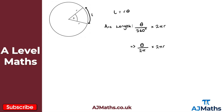Clearly the 2π cancels, and what we're left with is theta times r, or written as rθ, as required. The result is pretty straightforward: l is equal to rθ. To derive it again, just use the GCSE arc length formula. That's everything we need for an introduction to arc length.